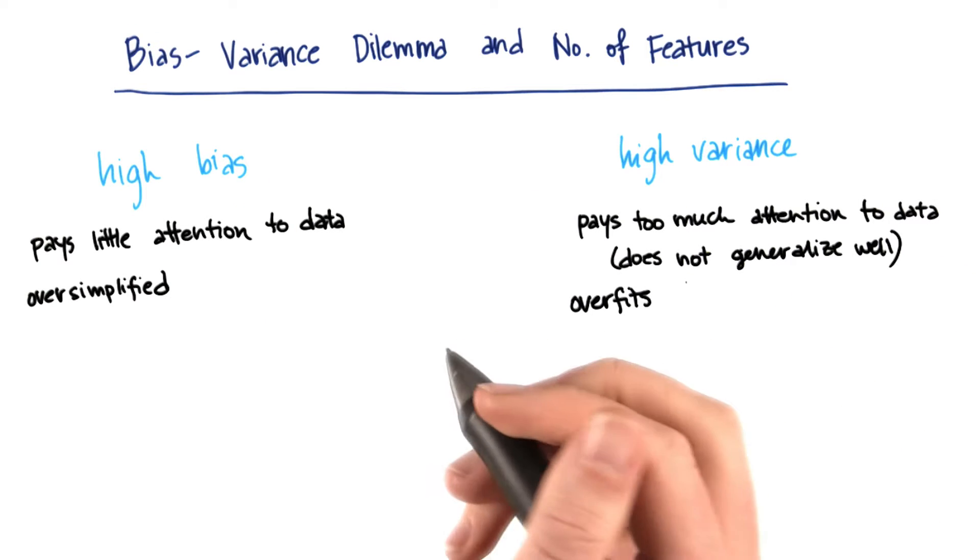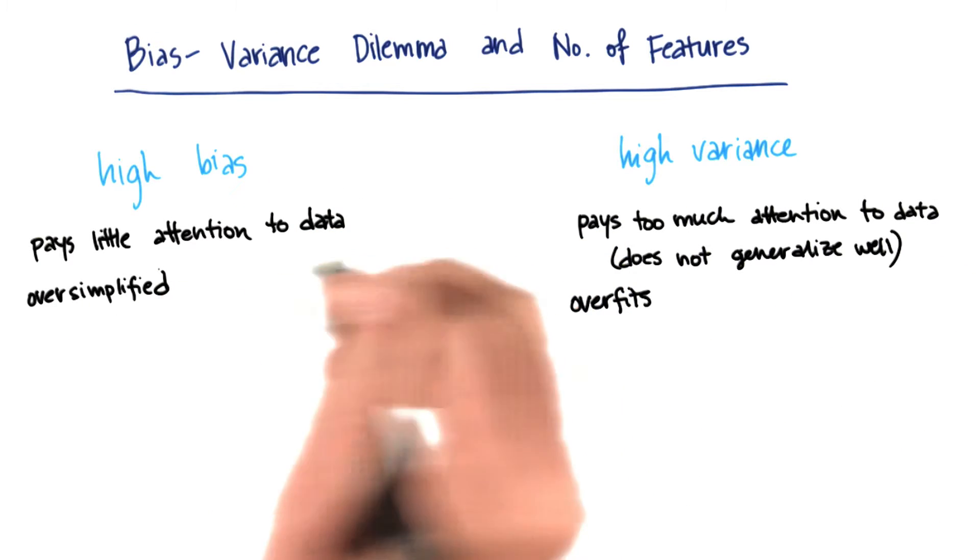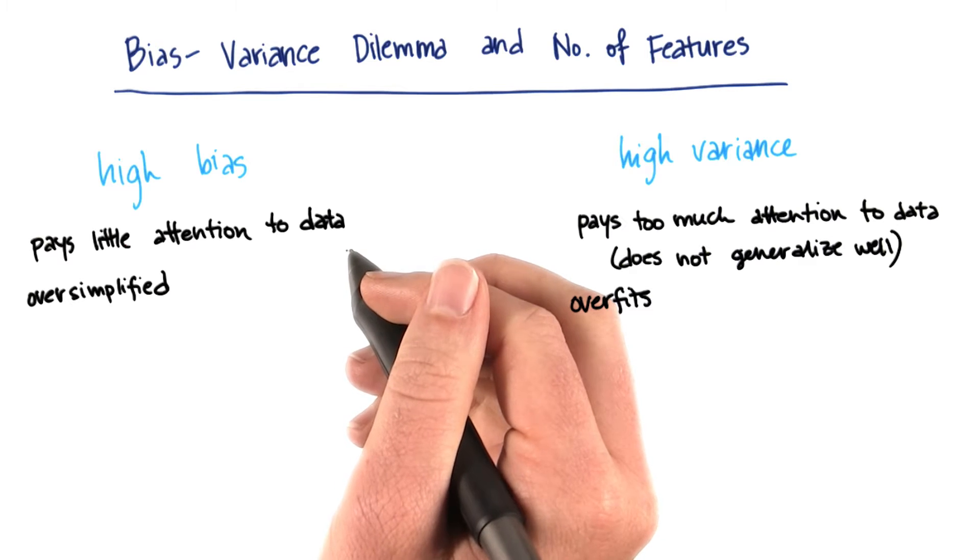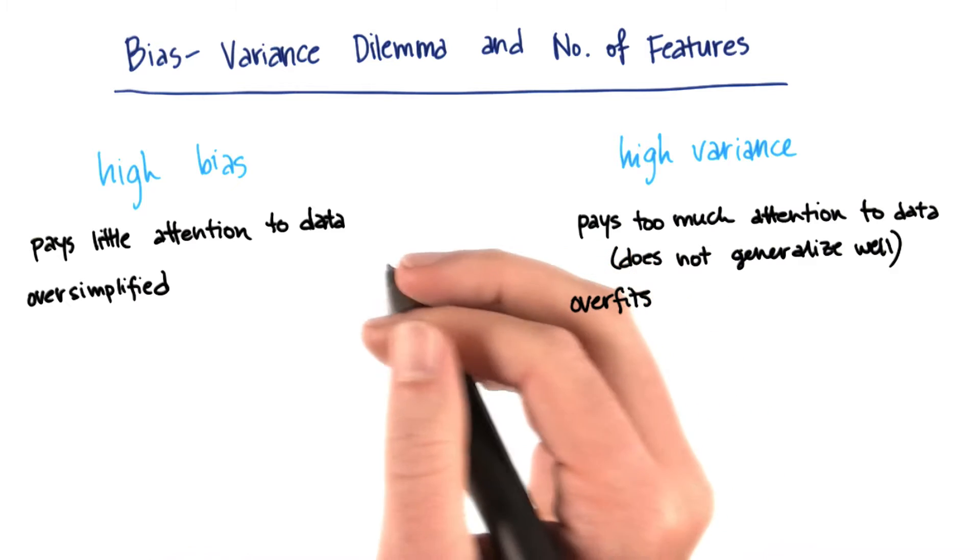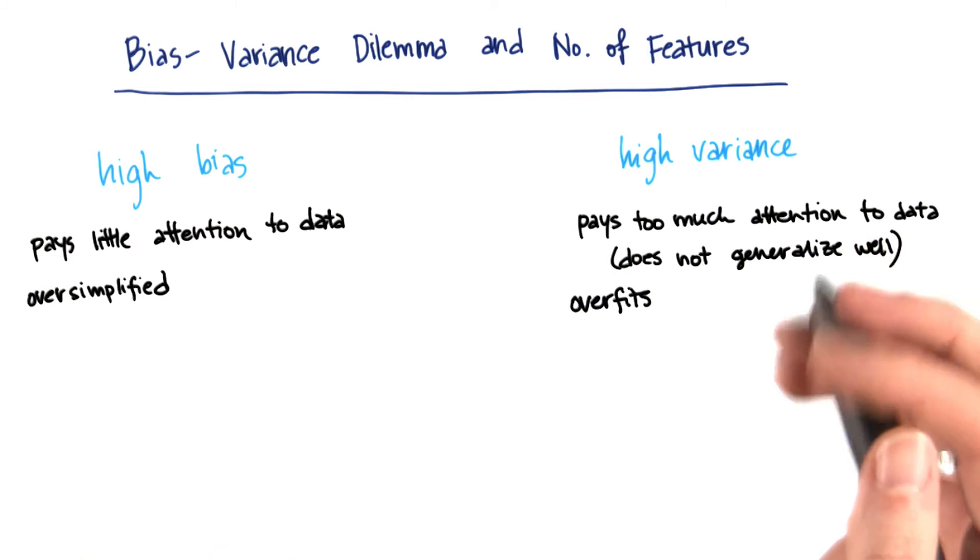Remember what we said before: a high bias algorithm is one that pays little attention to the training data and is kind of oversimplified. It just does the same thing over and over again, regardless of what the data might be trying to tell it to do.